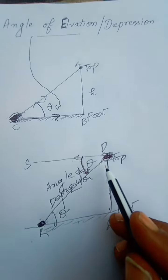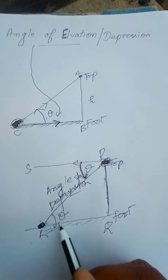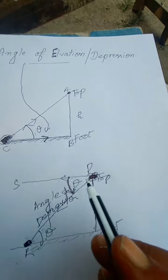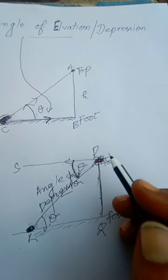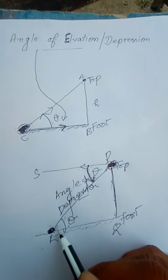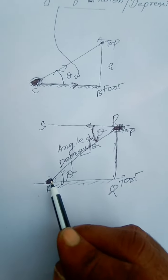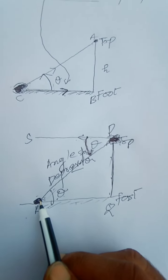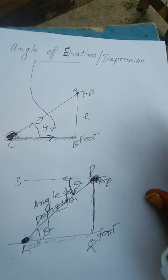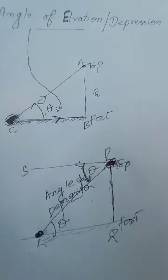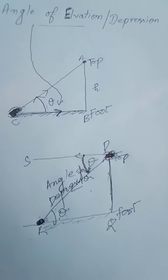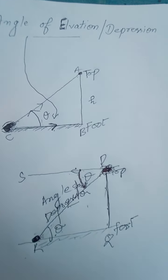One very important thing: the angle of depression and angle of elevation are always equal, by the alternate interior angle concept. Suppose if you are viewing the top of any construction and making angle theta for angle of elevation, then if you sit on the top of that construction and view that very point from where the angle of elevation was made, the angle of depression will be equal to the angle of elevation. This is a simple, easy explanation of angle of elevation and angle of depression.